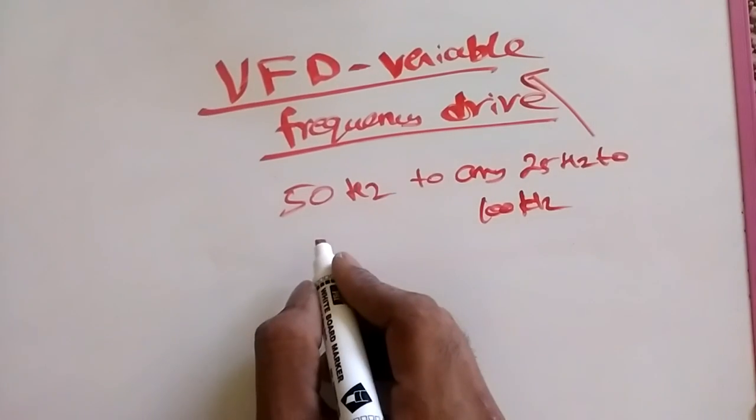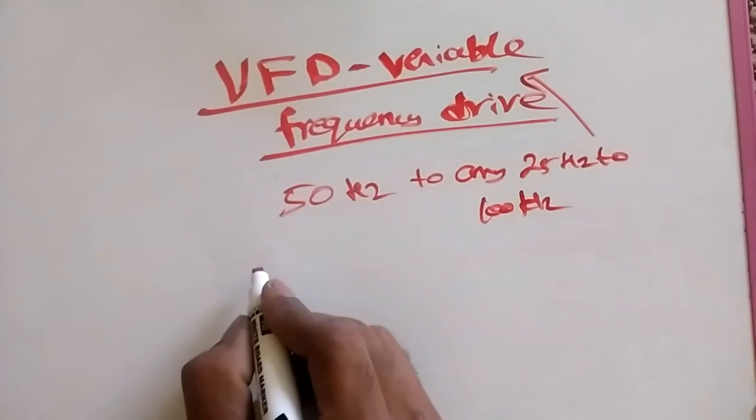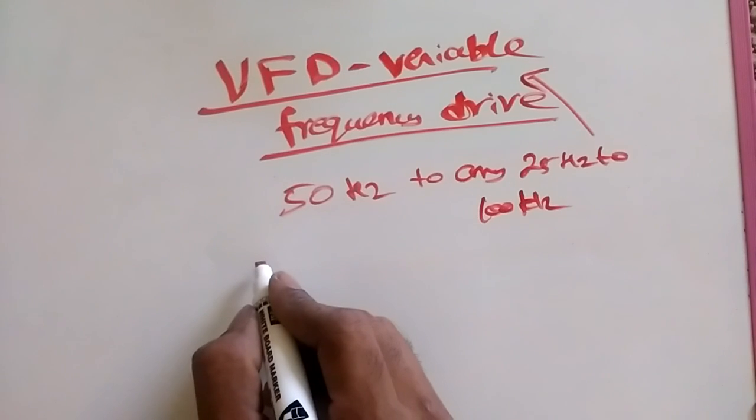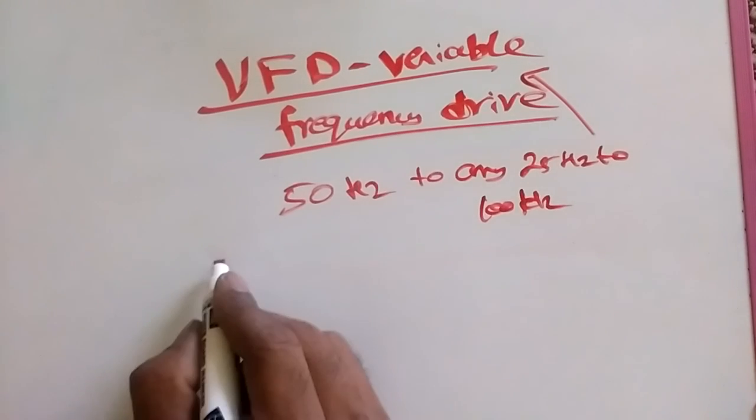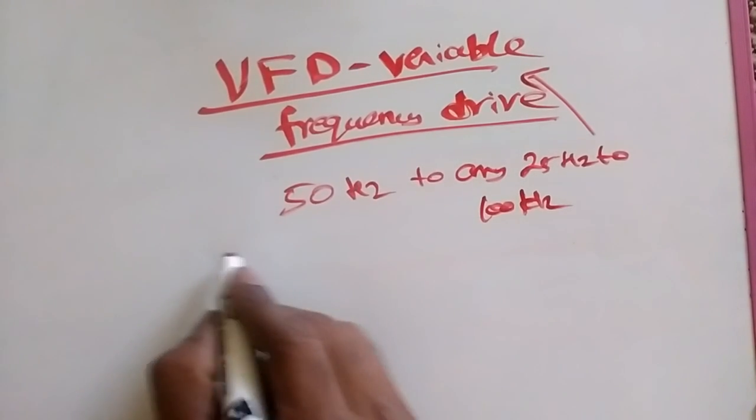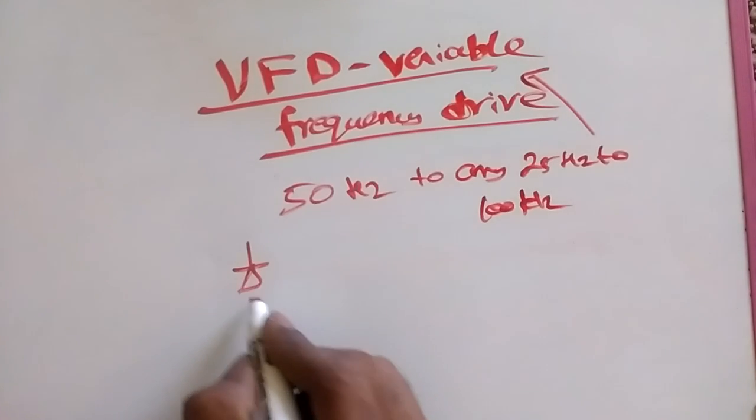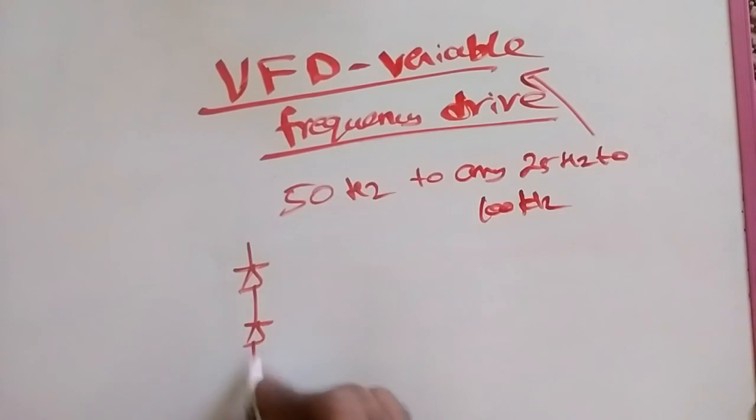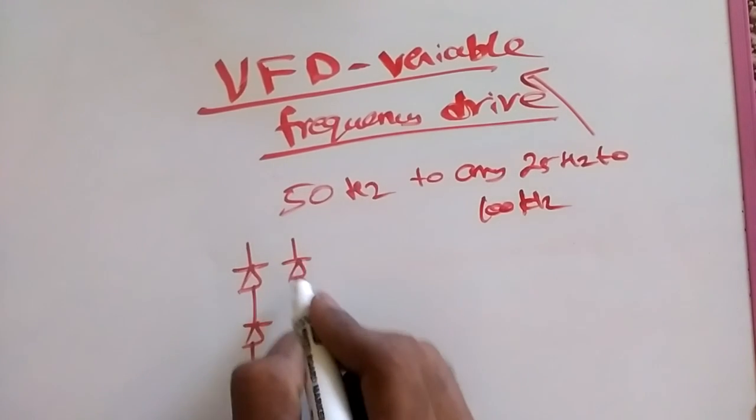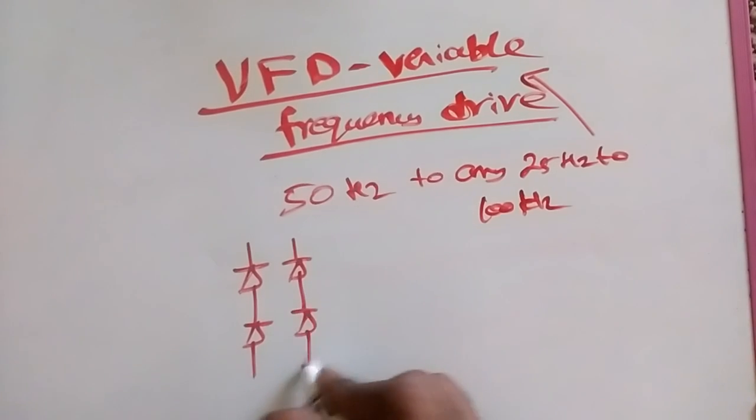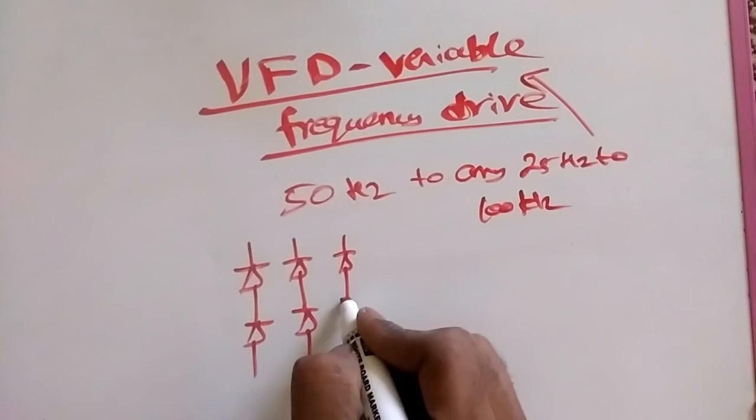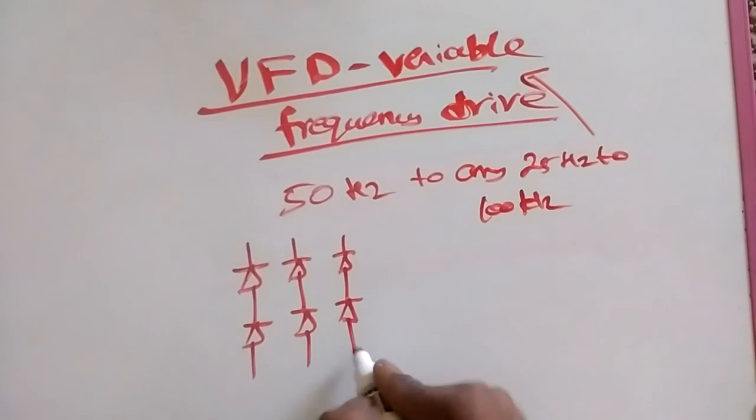We have a lot of methods, but we are going to see today electronic based, how do we change the frequency. Mostly we are going to use diode for changing the voltage of AC to DC. Here we are going to change the voltage from alternating current to direct current.